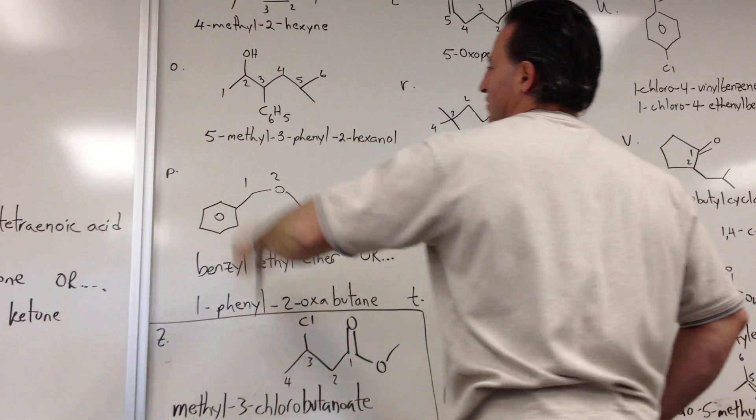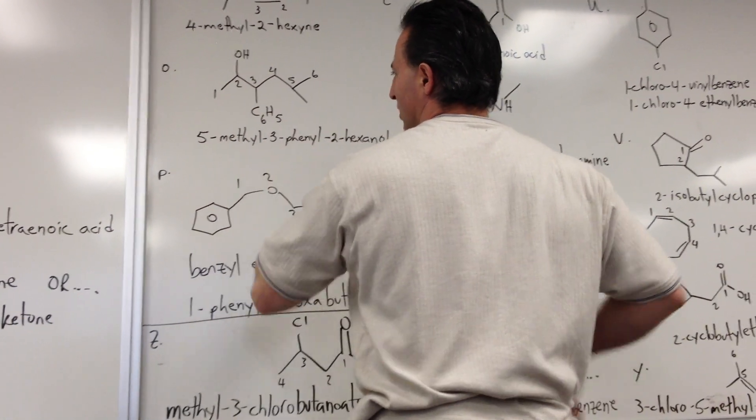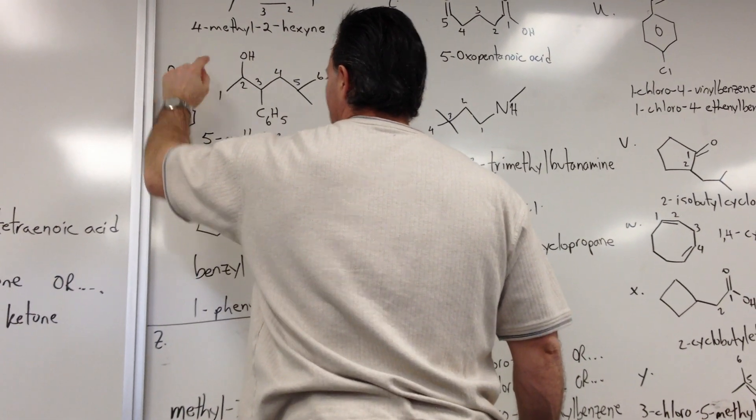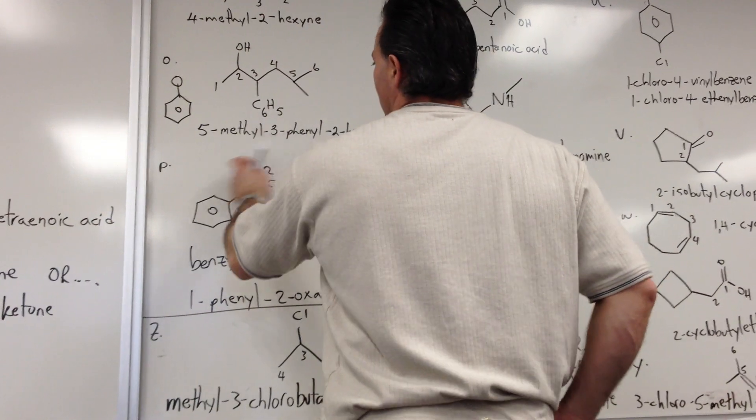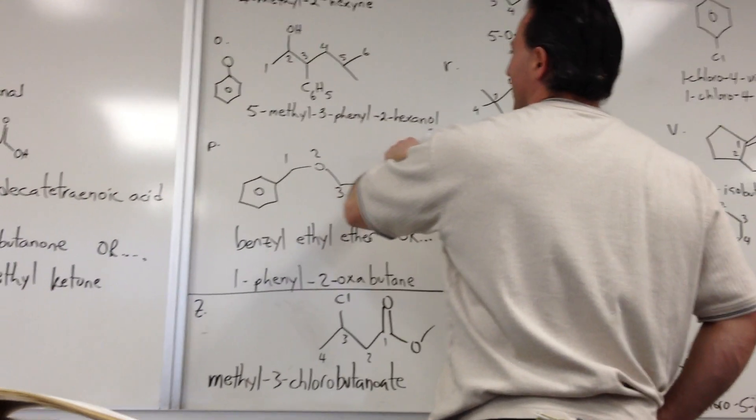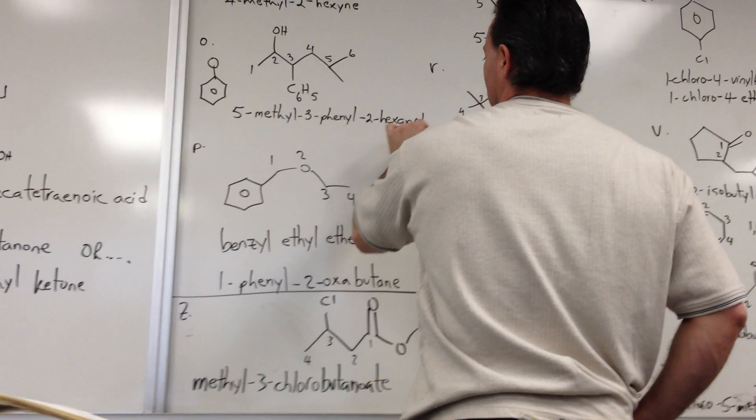O with the longest chain of 6. There's a phenyl group at the 3rd position. When we see C6H5, we assume a benzene ring. It looks like this. It's a benzene ring with a pendant bond. So it's a benzene ring attached to something. So that's a phenyl. There's a methyl group at the 5th position. 5-methyl-3-phenyl-2-hexanol. The 2 indicates the position of the hydroxy group.